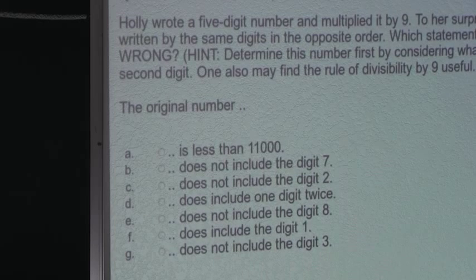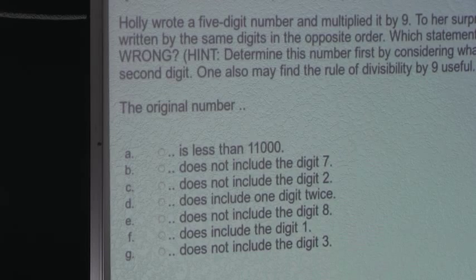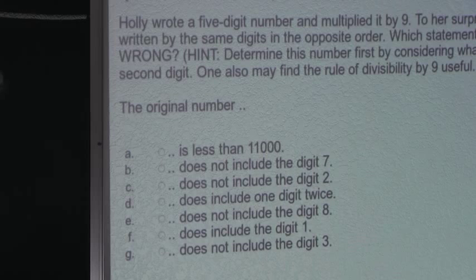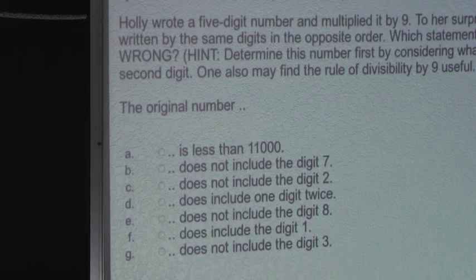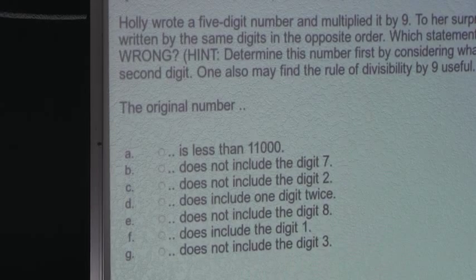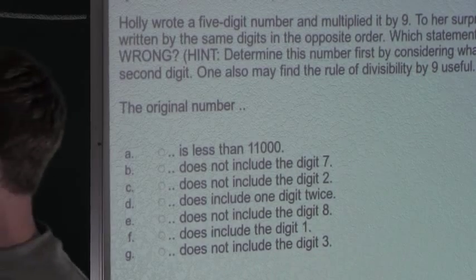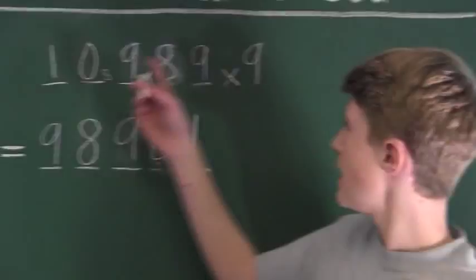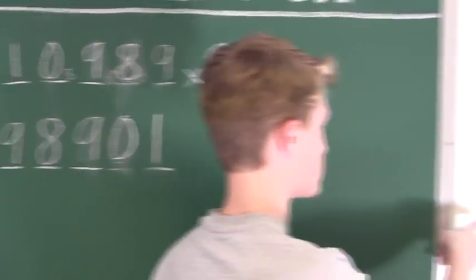Option C says the original number does not include the digit 2 — that is correct, because the number is 10,989. Option D says the original number does include one digit twice — that is correct, because there are two 9s. Option E says the original number does not include the digit 8 — that is false, because the number is 10,989. So the answer must be E.